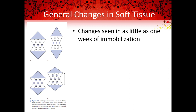Fibrosis continues to increase when circulation is impaired due to age or local conditions. Edema works like a glue to bind tissues down, particularly when edema is prolonged. Immobilization also produces structural weaknesses. These weaknesses occur due to decreased collagen mass, likely caused by a reduction in the applied load or stress.